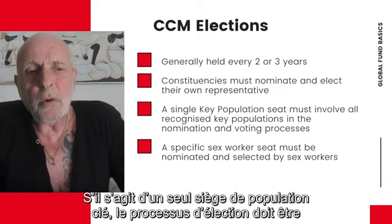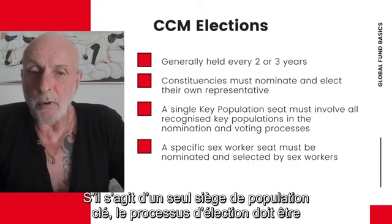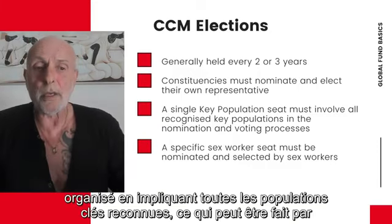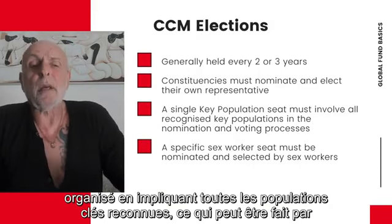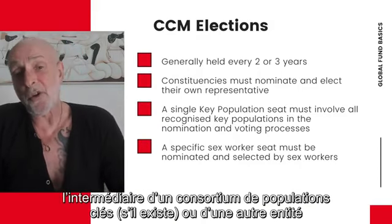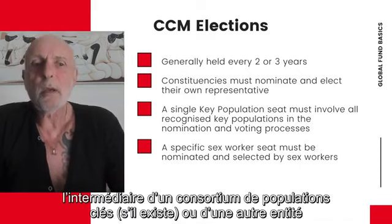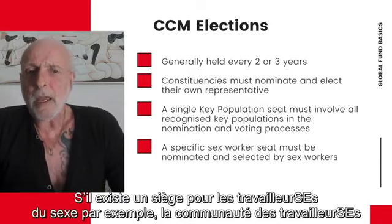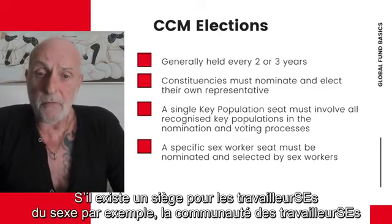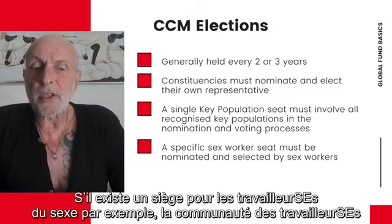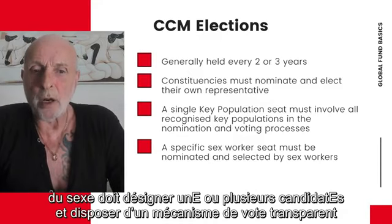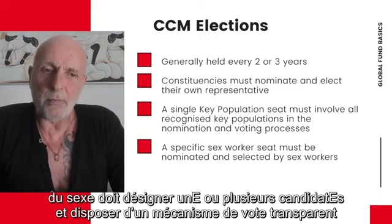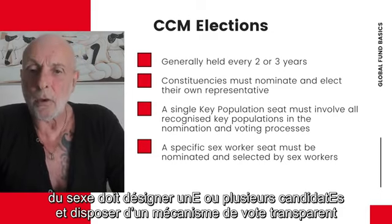If it is a single key population seat, the election process must be organised involving all recognised key populations. That might be done possibly through a key population consortium, if one exists, or through another independent entity. If there is a sex worker seat, for example, then the sex worker community should nominate one or more candidates and have a transparent voting process to elect their own representative.